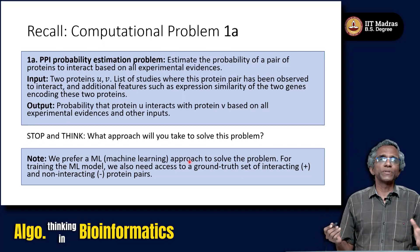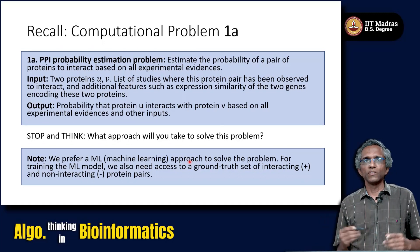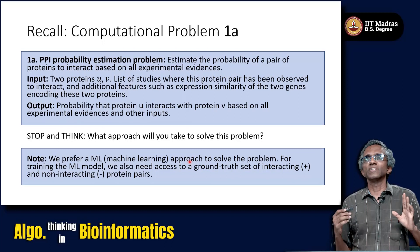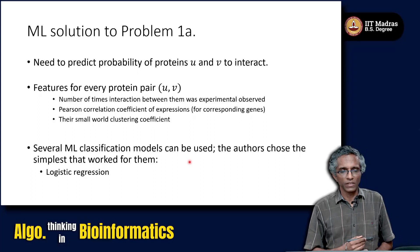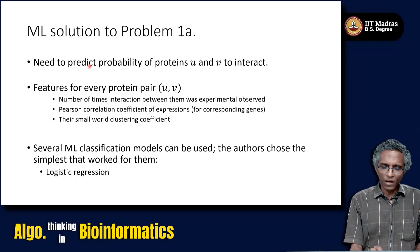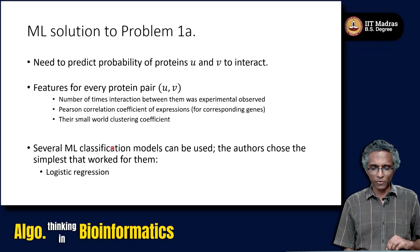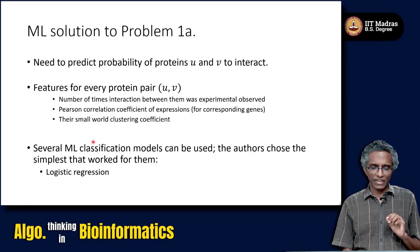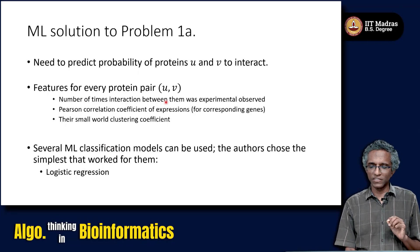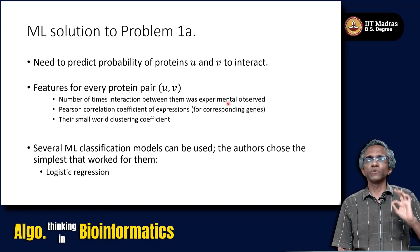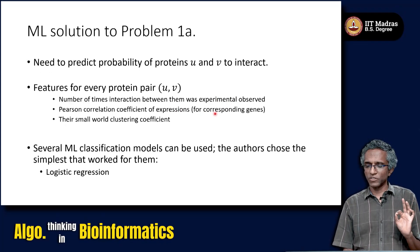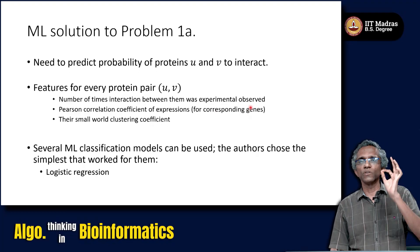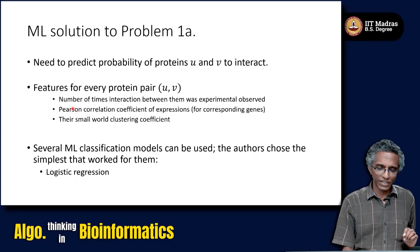Let us recall computational problem 1A and look at the solution. We want an ML approach to estimate the probability that protein U interacts with protein V. To predict this probability, we need some input features. The number of times the interaction between U and V is experimentally observed could be one feature. Another feature could be the similarity of the expression of the corresponding two genes that code for proteins U and V.